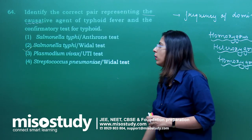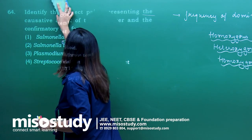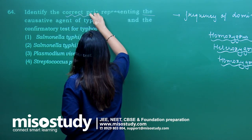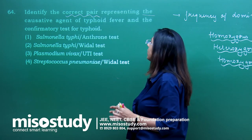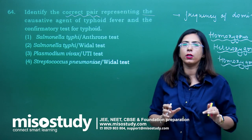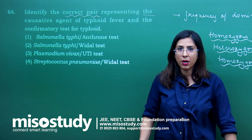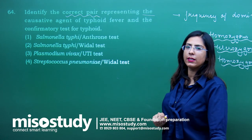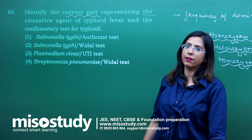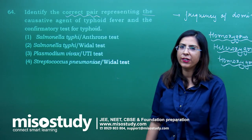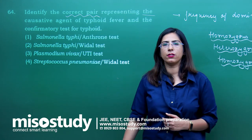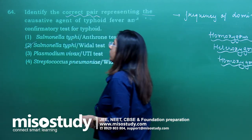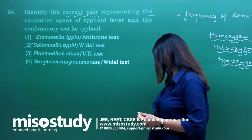Question number 64 — identify the correct pair representing the causative agent of typhoid fever and the confirmatory test. This question is from human health and diseases. Typhoid is caused by Salmonella typhi, and the confirmatory test is the Widal test. This was again a direct question. The correct answer is option 2.